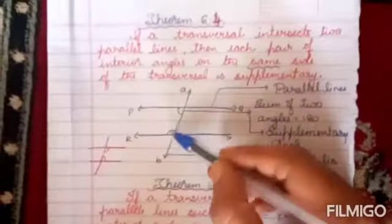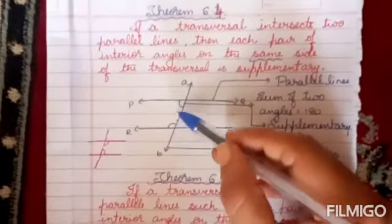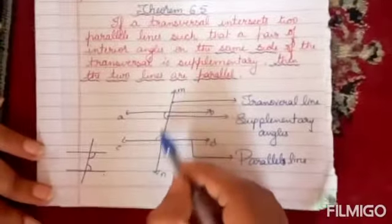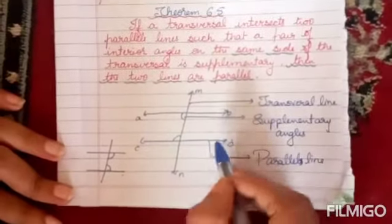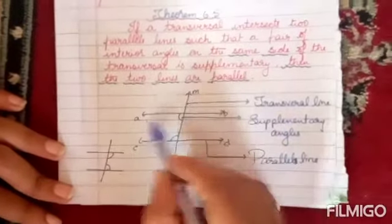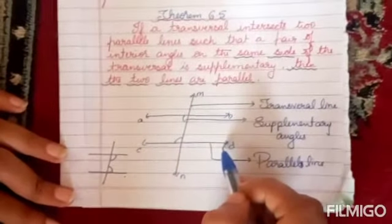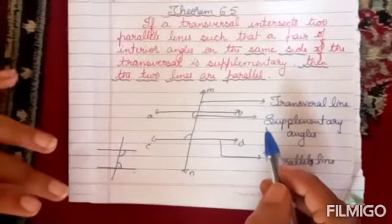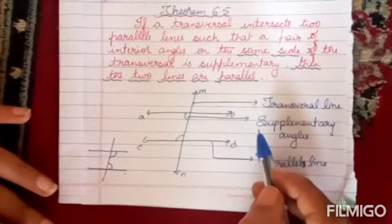Come to Theorem 4. Even here they are saying these two interior angles on the same side are supplementary. According to Theorem 5, these two interior angles on the same side are supplementary and the two lines are parallel — that is what they want you to identify.